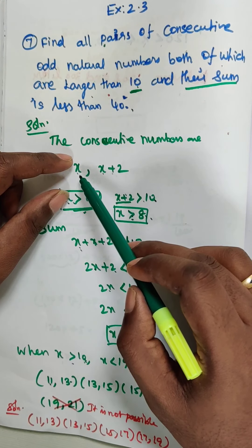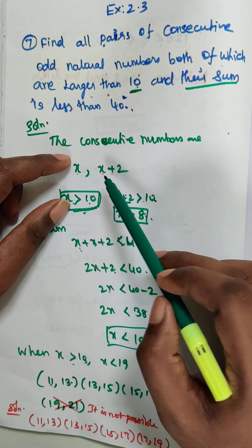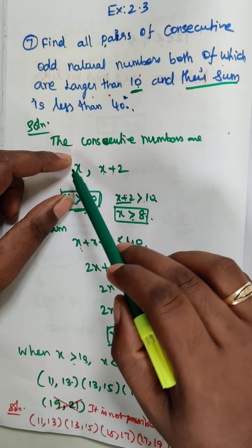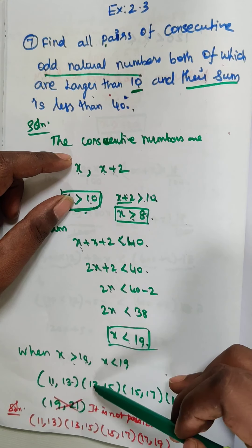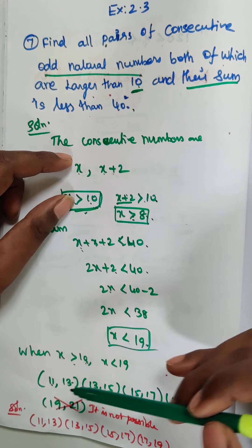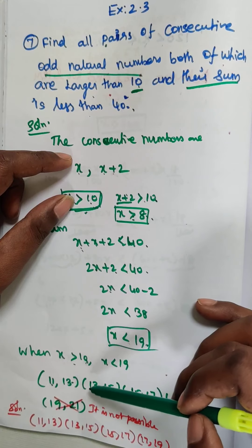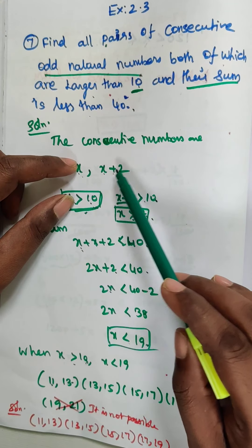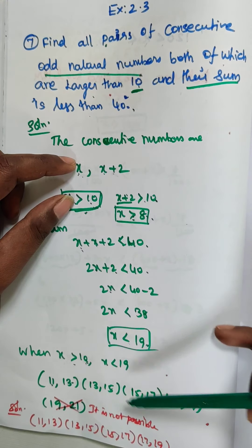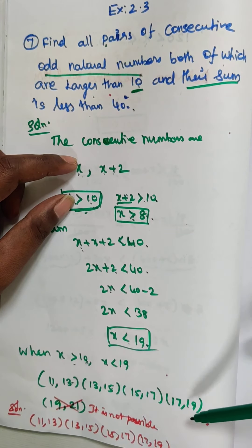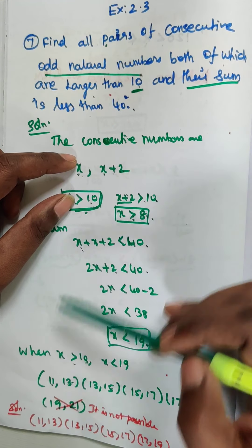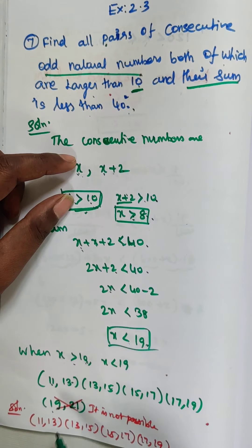The odd numbers in the interval are 11, 13, 15, 17, 19. Next pair: 13 plus 2 is 15. Next: 15 plus 2 is 17. Next: 17 plus 2 is 19. For x equals 19: 19 plus 21 equals 40, which is not less than 40, so this pair is not possible.